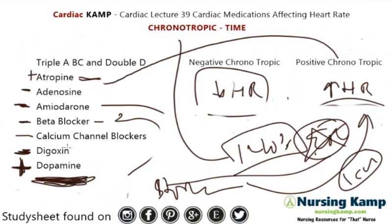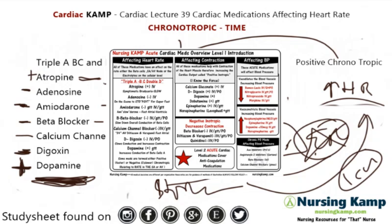So to review, we have adenosine, atropine, amiodarone, beta blockers, calcium channel blockers, digoxin, and dopamine. In my next lecture I'm going to talk about inotropic and the force of contraction. That's it from my sticky note on cardiac medications. You can find me on social media — Instagram, Facebook, Pinterest, Google, Etsy, Twitter — and at nursingcamp.com. Nurse on!